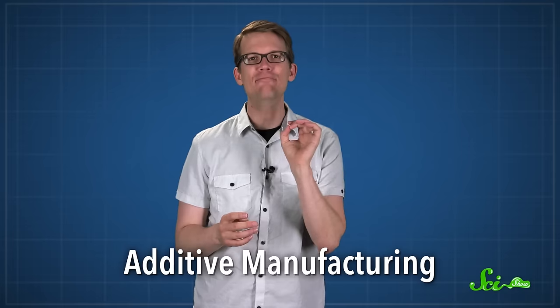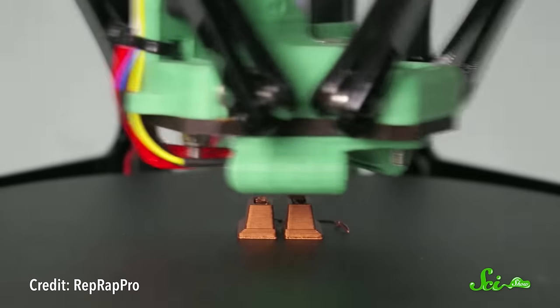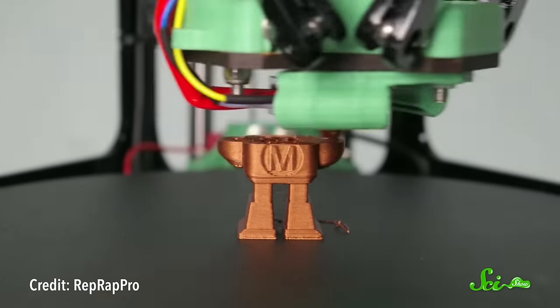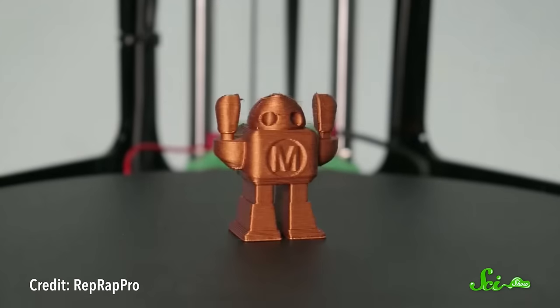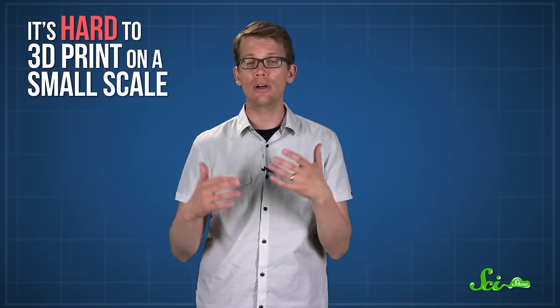3D printing is sometimes known as additive manufacturing, which should give you some idea of how it works. You program a 3D printer with a design, and it builds a thing according to that design, generally by stacking layers of material on top of each other. But one problem that's come up is that it's hard to 3D print on a small scale. If you're printing something that's, say, five hundredths of a millimeter wide, every fraction of a millimeter counts. But 3D printers are getting more precise all the time.